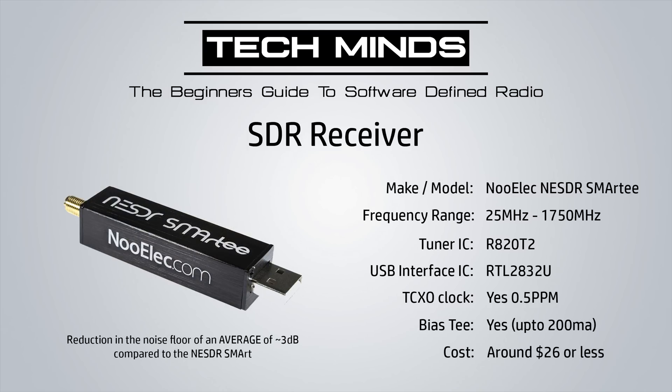Moving on to the NESDR SMART-E — you may look at it and think it looks the same as the last one, but according to the Nuilek website this SDR receiver was completely redesigned from the ground up. By doing so they managed to reduce the noise floor by around 3dB compared to the original SMART. It also has a frequency range of 25MHz up to 1750MHz and a temperature controlled oscillator.